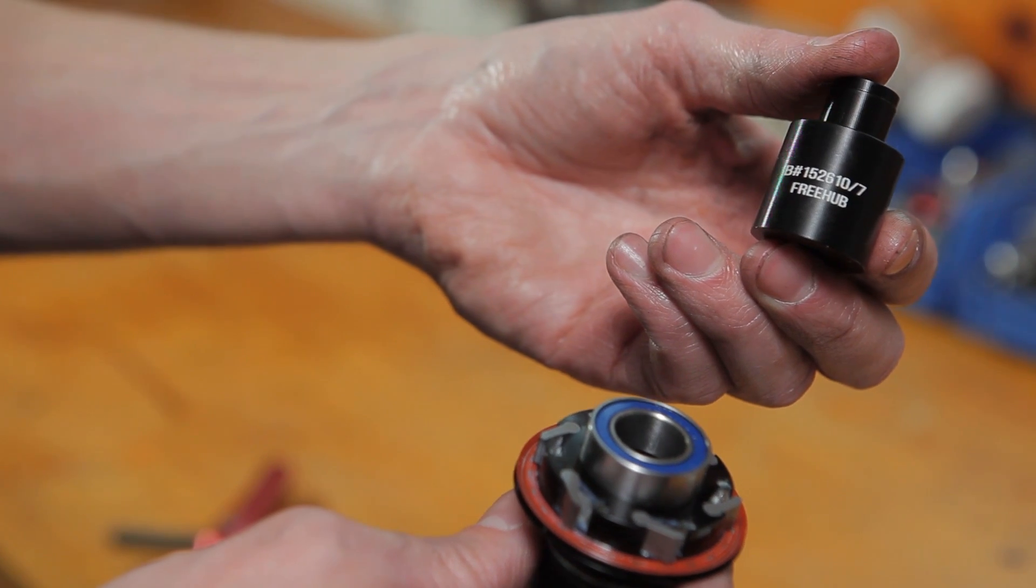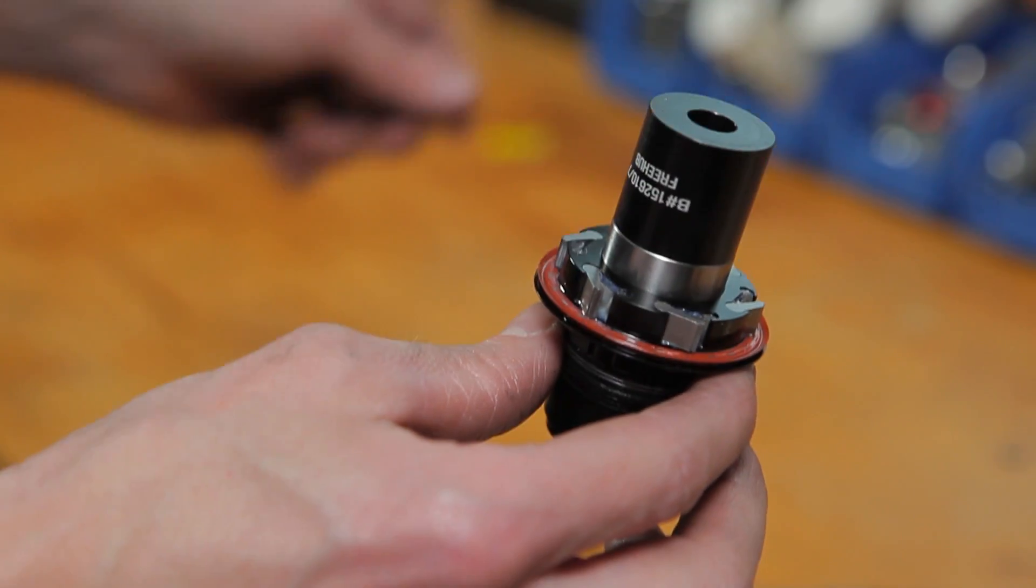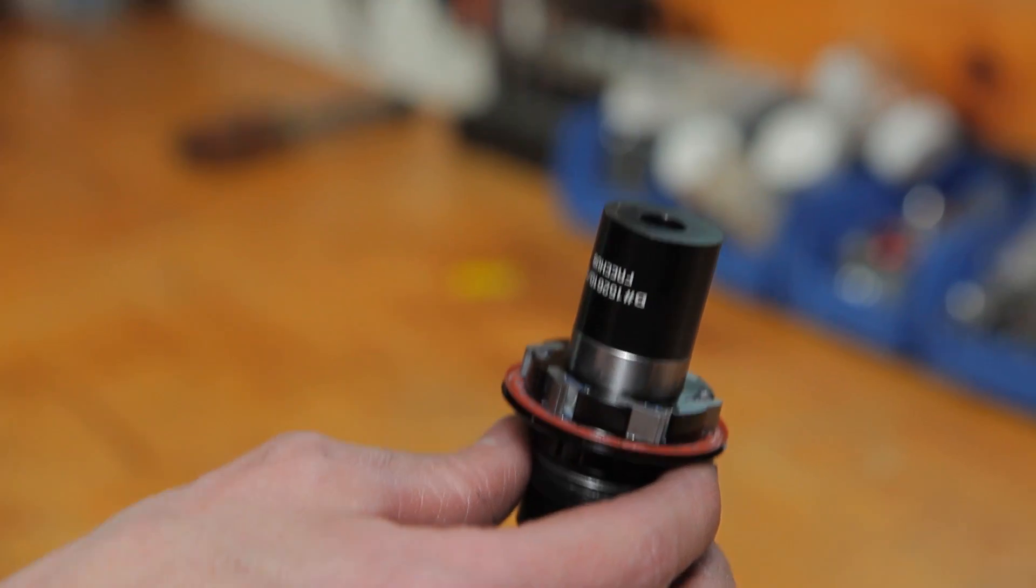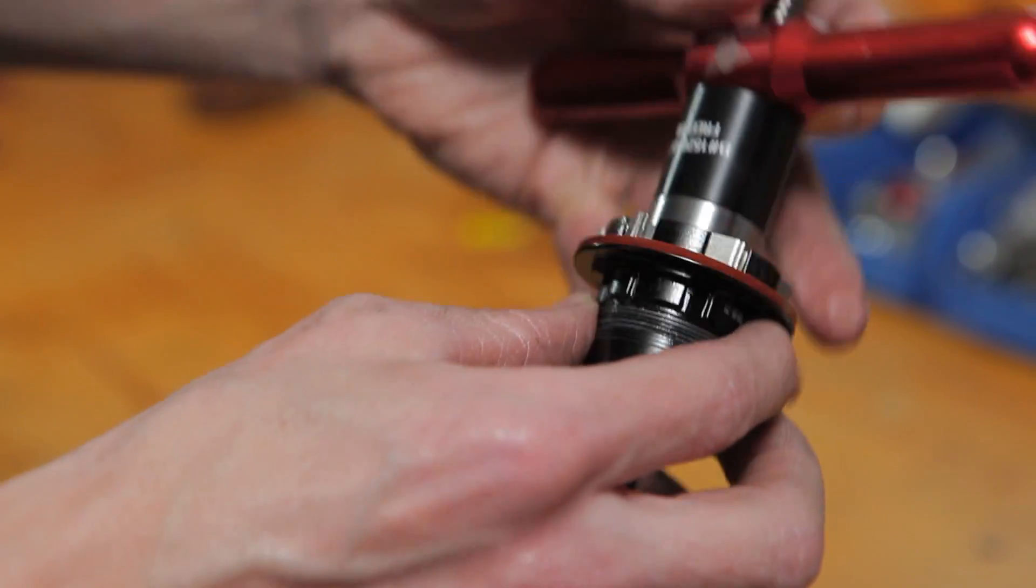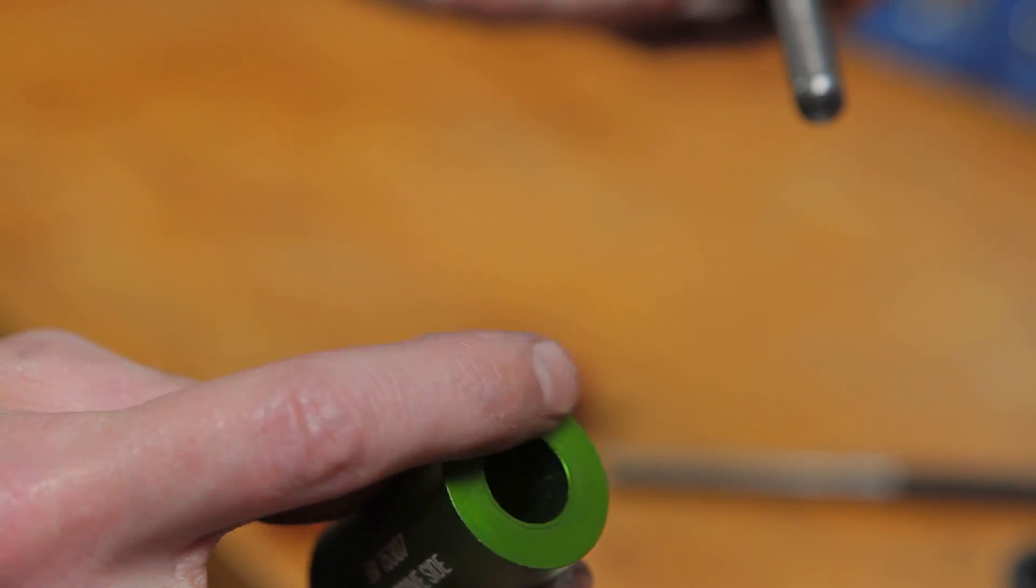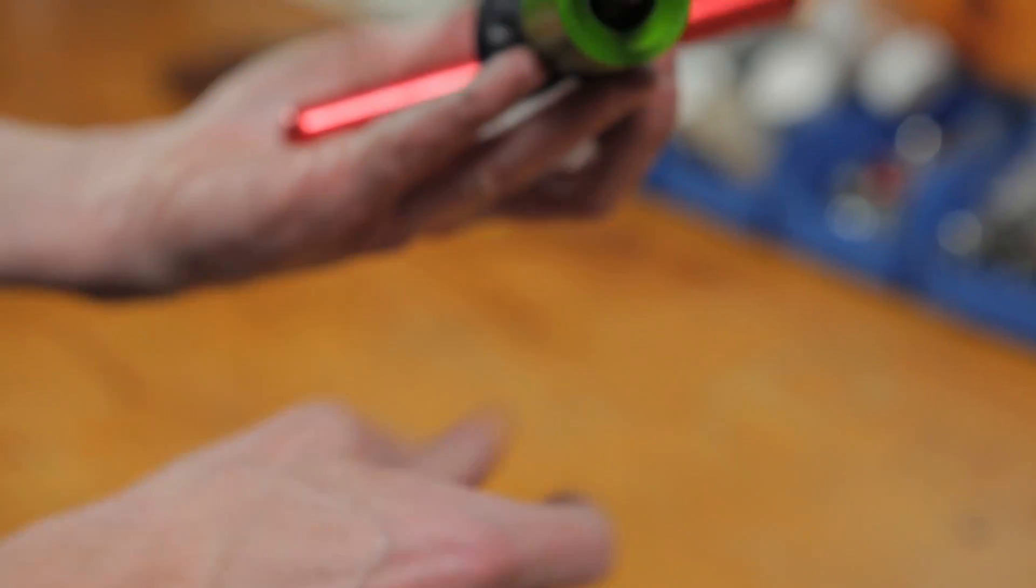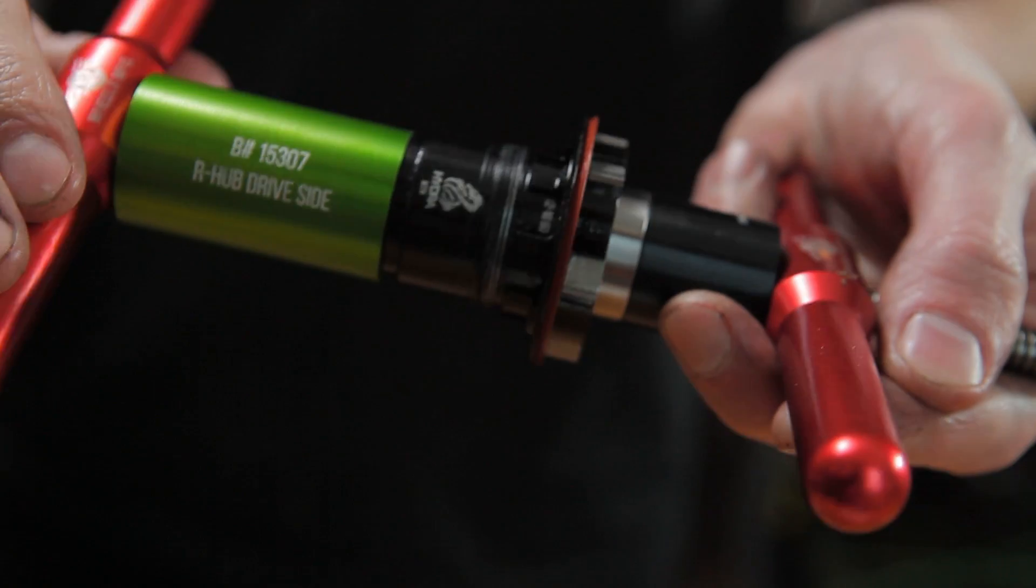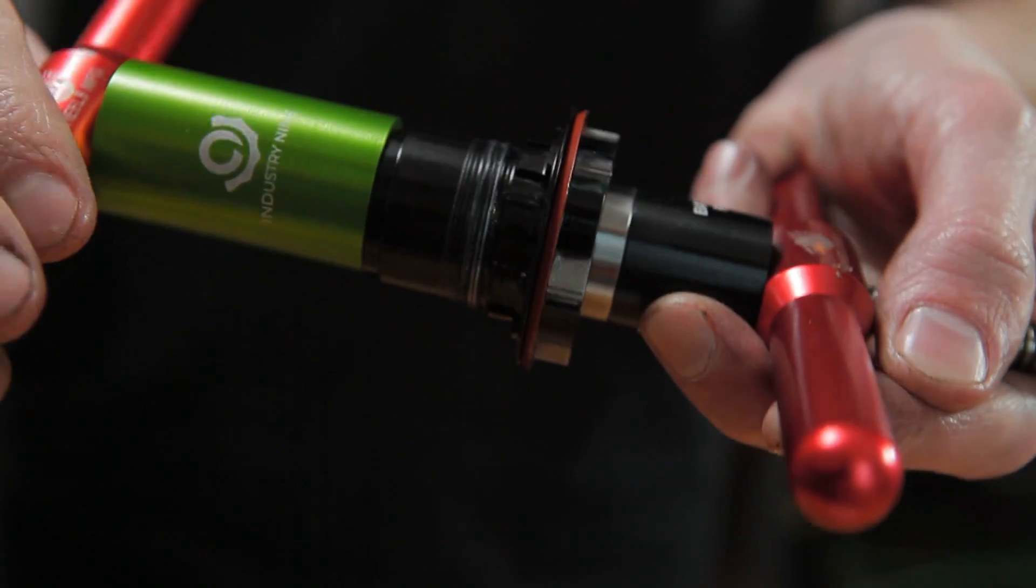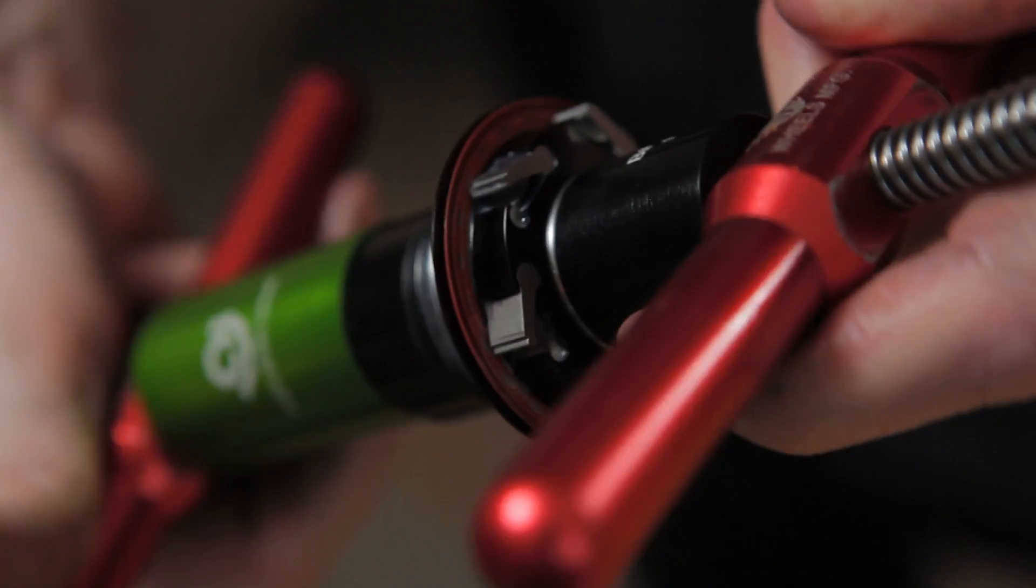You'll need the 15-26-10-7 press adapter for this job. With the double-row bearing staged, insert the press adapter. Now you can stage the press. Use the flat edge of the 15-307 adapter against the face of the freehub shell. Be sure the double-row bearing is pressed completely into its seat.